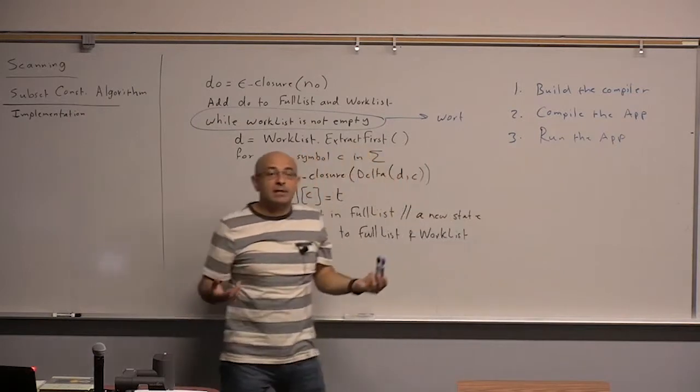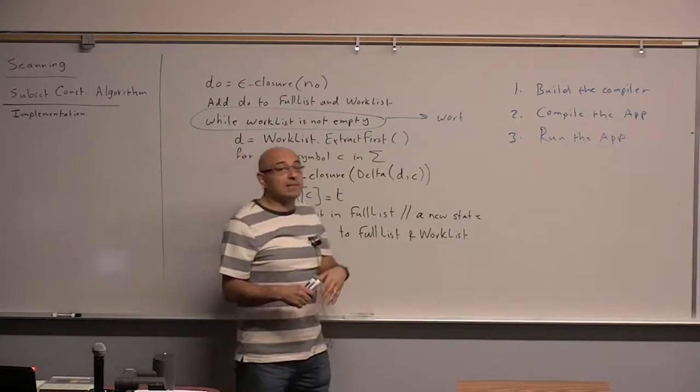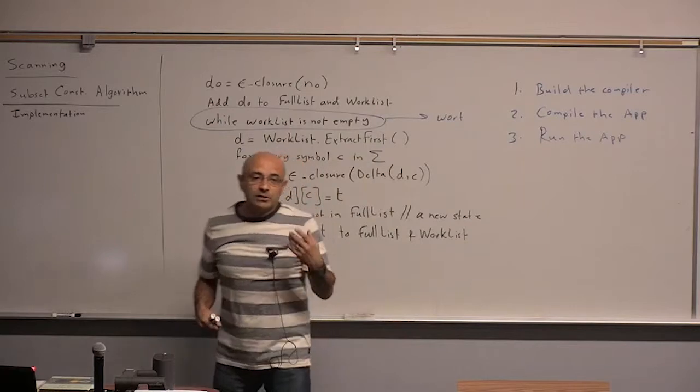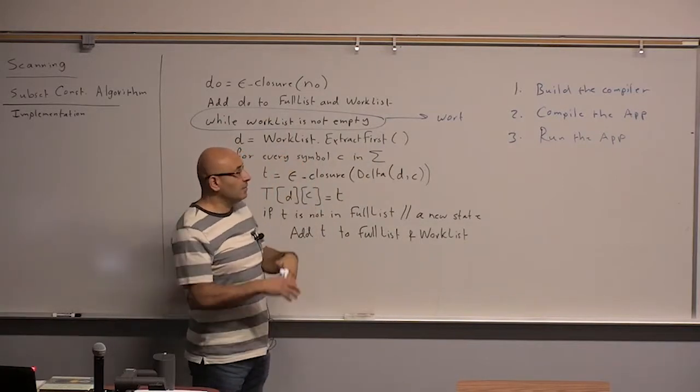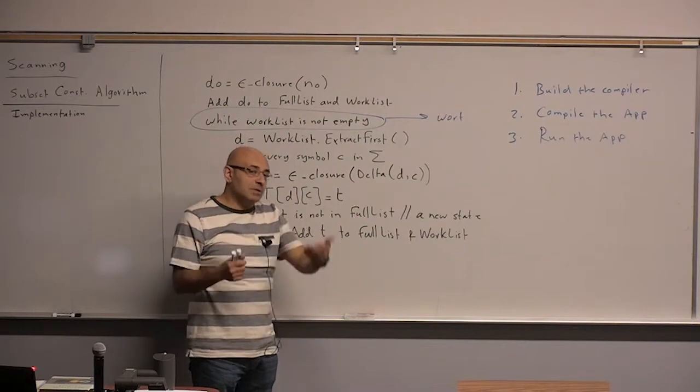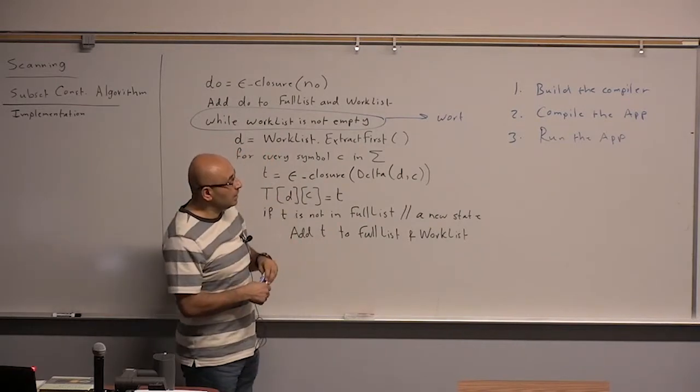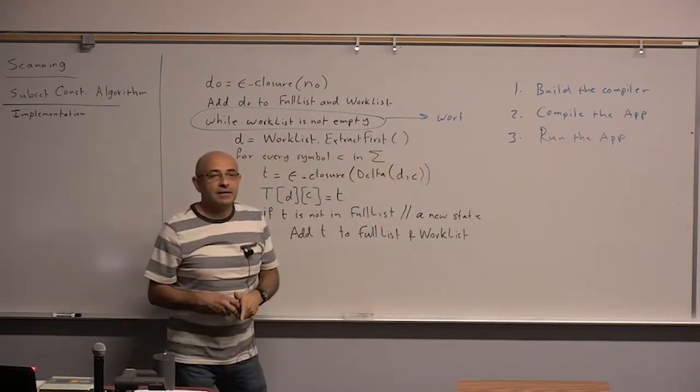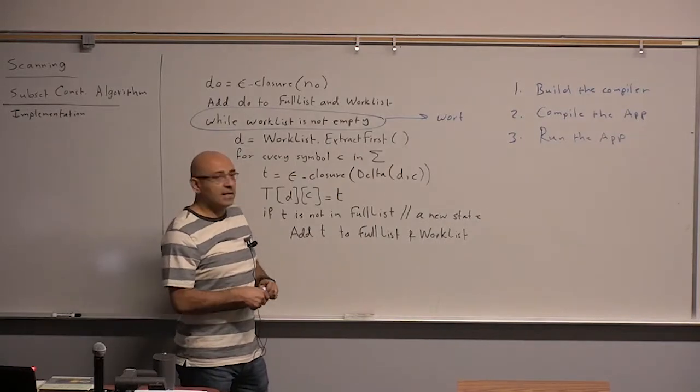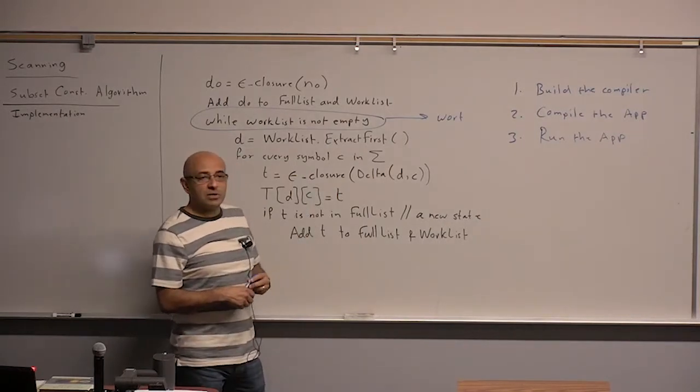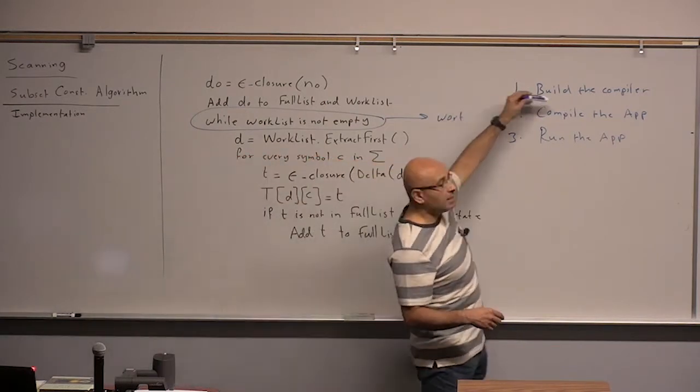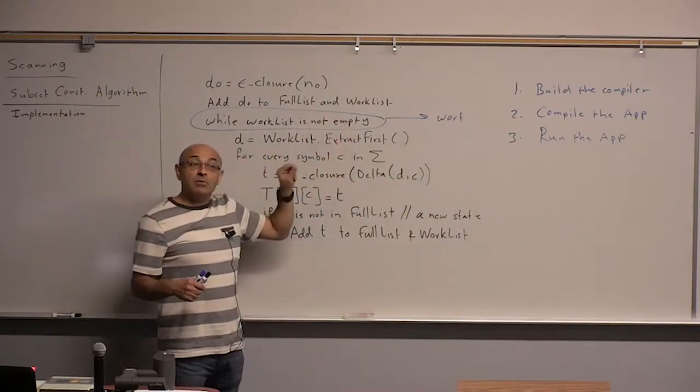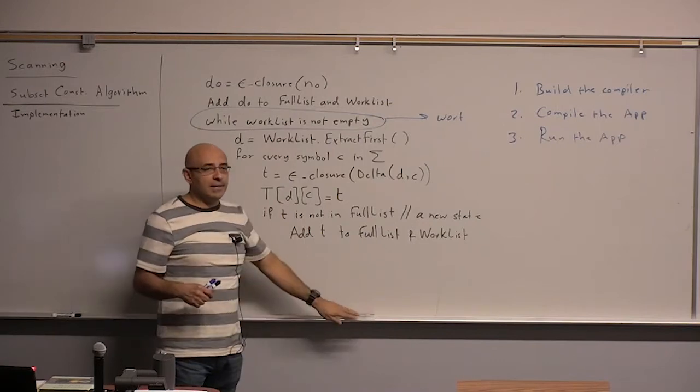But, building the compiler itself is done even less frequently. You build the compiler. Who builds the compiler? The company that makes the compiler. So, if you are using Visual C++, it's Microsoft. Only Microsoft builds that compiler. It's not even when the application programmers use the Visual C++ compiler to build their applications. So, the point is that this is something that is not done very frequently, building a compiler. Whether it's an open source or a closed source compiler, building a compiler is not something that happens frequently and this algorithm is done when we are building a compiler, not when we are compiling an application.